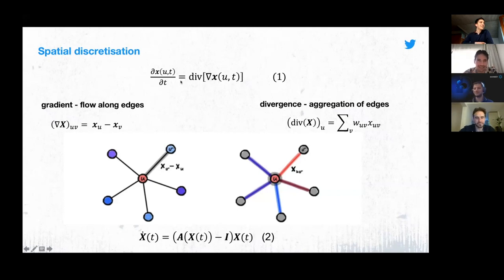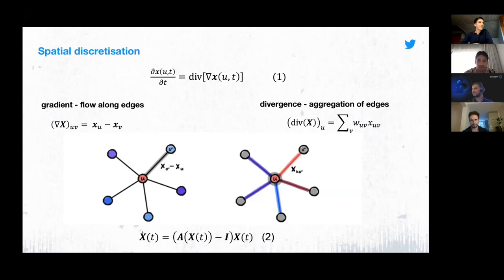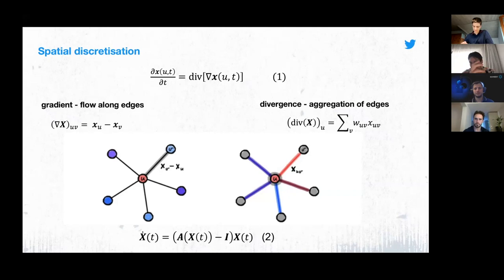Let's start with the continuous equation in continuous time and continuous space, and do the spatial discretization first. Spatial discretization of differential operators is actually more intuitive on a graph than in continuous space. The gradient on a graph is a function that lives on the edges and is simply the difference of a field on the nodes. The divergence lives on a node and is just the sum of this edge gradient field. When you put all those things together you end up with an equation that starts to look a lot like the message passing function of a GNN.